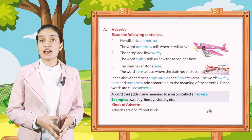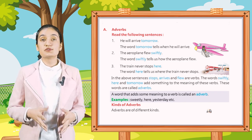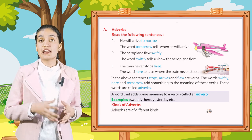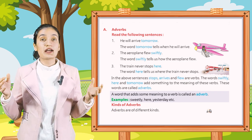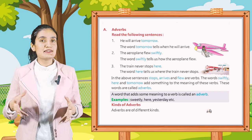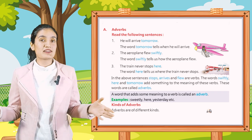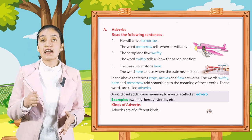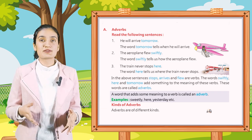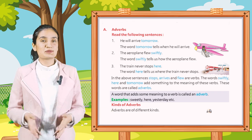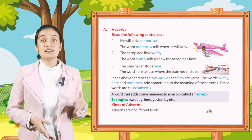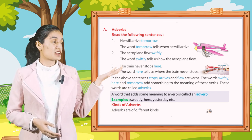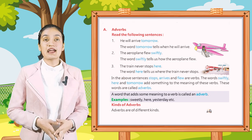In the above sentences, 'stops', 'arrives', and 'flew' are verbs. The words 'swiftly', 'here', and 'tomorrow' add meaning to these verbs. These words are called adverbs. A word that adds some meaning to a verb is called an adverb. Examples: sweetly, here, yesterday, etc.